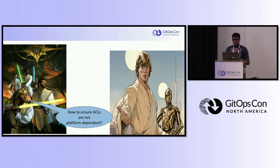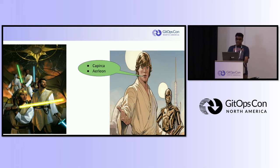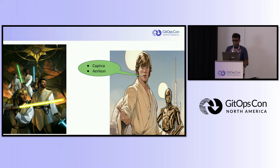A major challenge with network ACLs is that they are platform dependent. Let's examine tools that address this. The first is Capirca, a tool developed by Google that works on a high-level policy language. It takes policy definitions as inputs and generates platform-specific ACL configurations, supporting multiple platforms such as Cisco, Juniper, and IP tables. An alternate option is Elion, which is a fork of Capirca, but provides a declarative language for defining ACL policies. It also supports multiple network platforms and is open source.